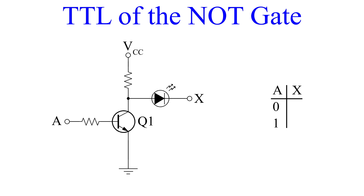Let's turn this on by applying the bias voltage. We can now see that the LED is on, indicating a high output. However, there is no input at A. So for an input of zero, we get an output of one.